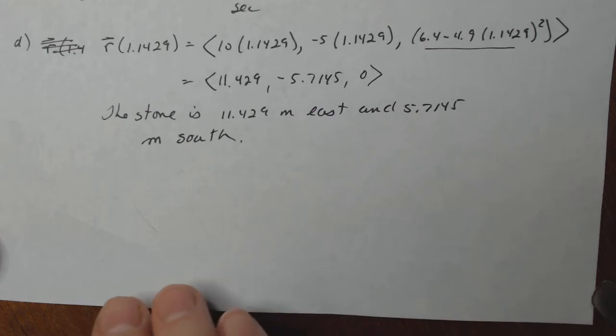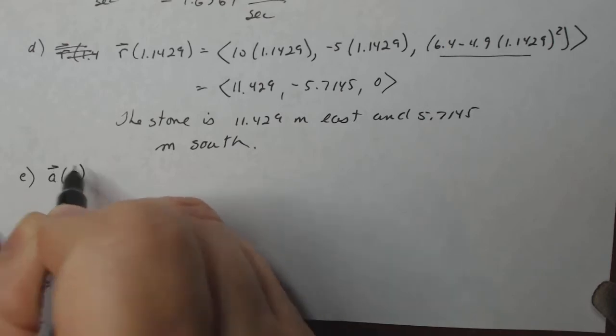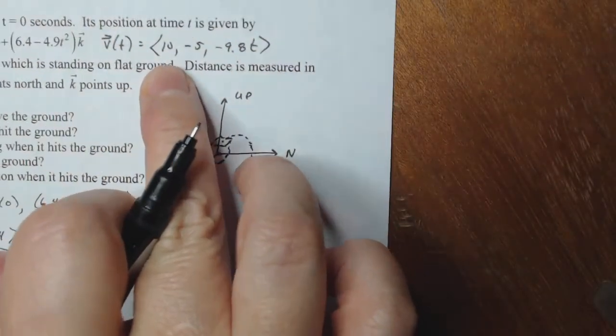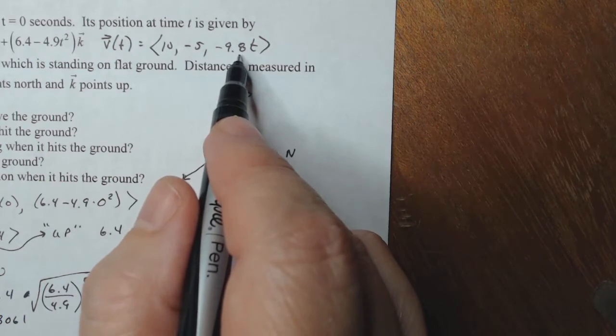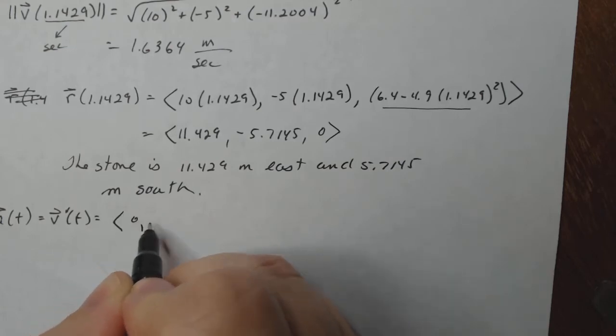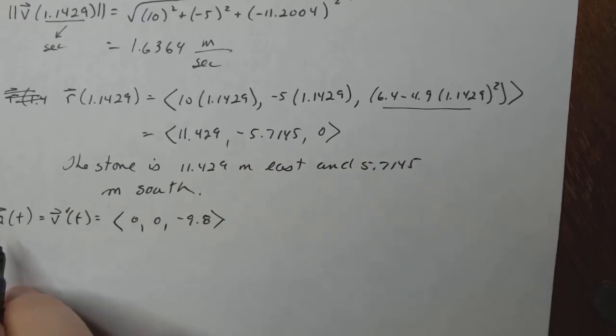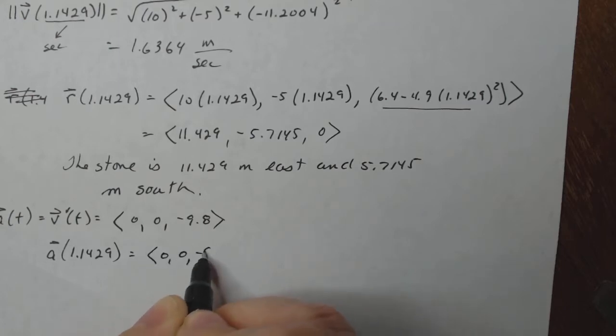What's the stone's acceleration when it hits the ground? Okay. So that means that I have to have the acceleration function, which means I need to take the derivative of my velocity function. Now this is my velocity function. So the derivative of a constant, both of those are going to be zero. The derivative of that is minus 9.8. So these are all constants actually, 0, 0, minus 9.8. And so if at any time t, that's my acceleration, that means that when t is 1.1429, that should also be 0, 0, minus 9.8.